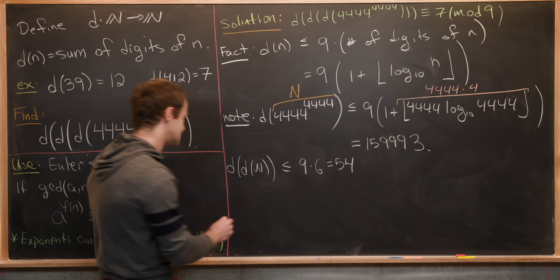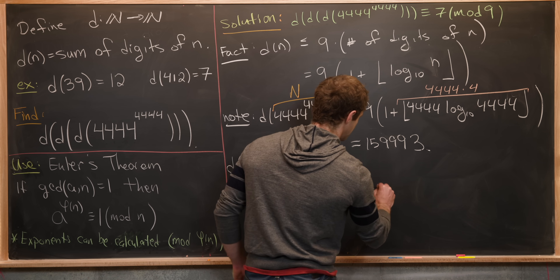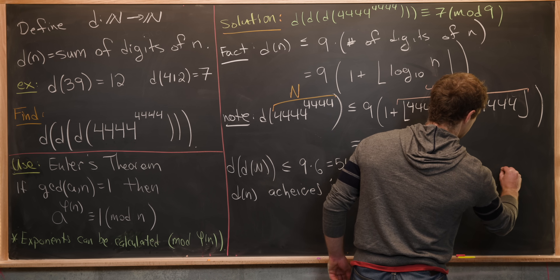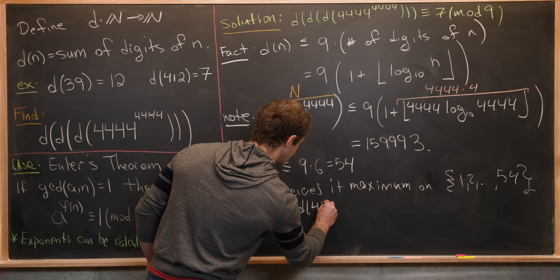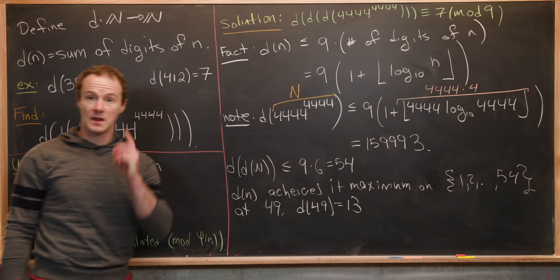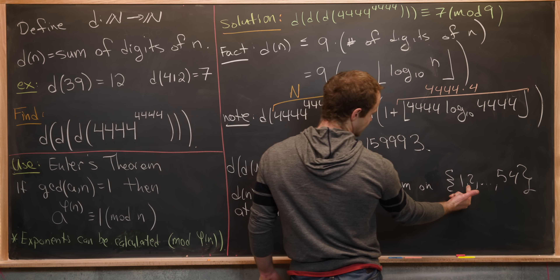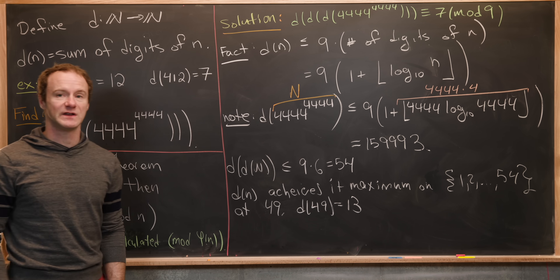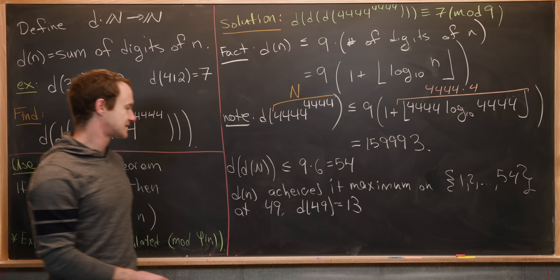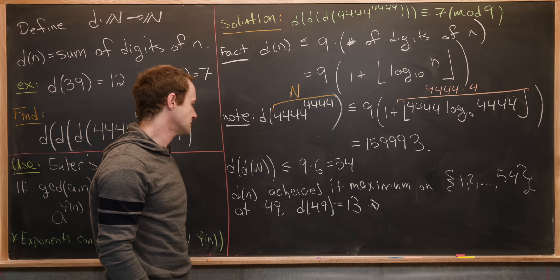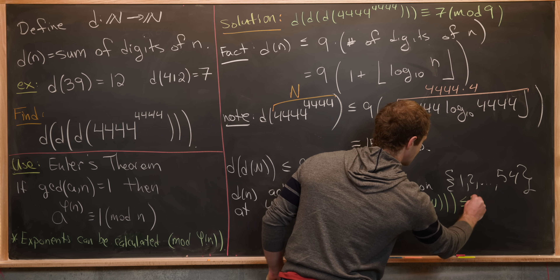Next, we notice that d(n) achieves its maximum on the set {1, 2, …, 54} at the number 49, and d(49) = 4 + 9 = 13. So applying d to any number in {1, …, 54} gives at most 13. Therefore d(d(d(N))) ≤ 13.